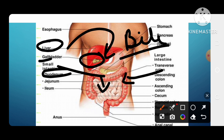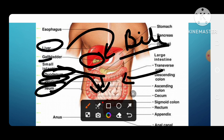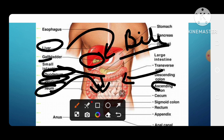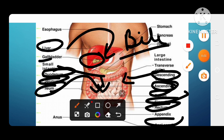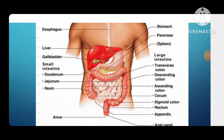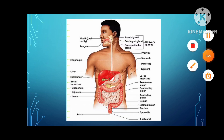The small intestine has three parts: duodenum, jejunum, and ileum. Where the ileum finishes, the large intestine starts. The large intestine has parts: ascending, descending, cecum, sigmoid, rectum, and anal canal — through which all the waste is expelled from our body. So that was all about digestion. If you have any confusion, you can ask me. Thank you.